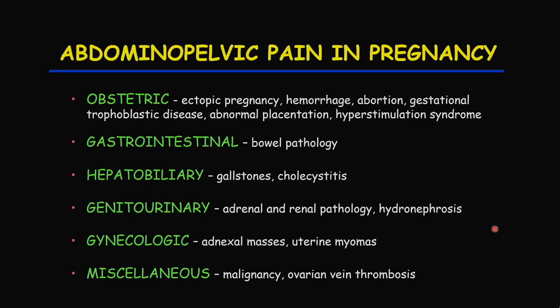We perform T2-weighted images in three planes, with and without fat suppression. We get at least one T1-weighted image, which helps us identify hemorrhage. We do not use contrast. There is a vast differential for abdominal pelvic pain in pregnancy — these can be obstetric, gastrointestinal, hepatobiliary, genitourinary, or gynecological in origin, and there may also be miscellaneous causes. I'm going to review each category and show examples.